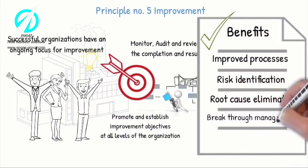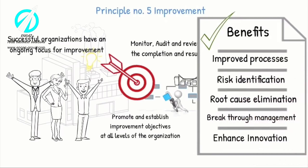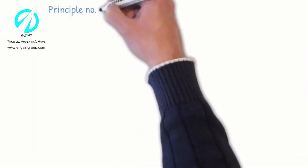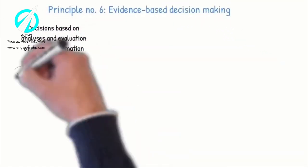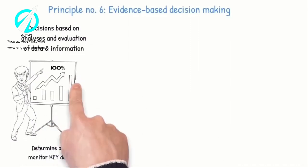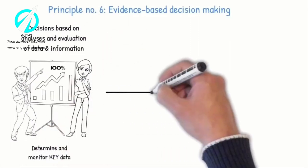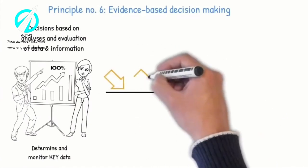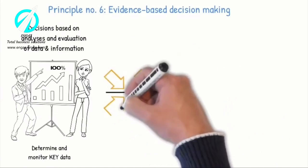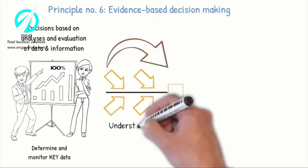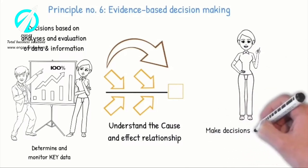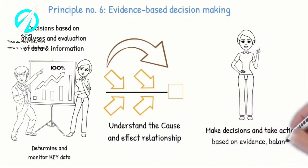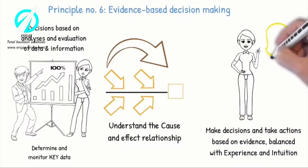Principle number six: Evidence-Based Decision-Making. Decisions are based on analyses and evaluation of key data and information that affect the effectiveness and efficiency of the processes. It is important to understand cause-and-effect relationships and their potential unintended consequences. The analyses of facts and data result in greater objectivity and confidence in making decisions, and then take actions based on evidence balanced with experience and intuition.